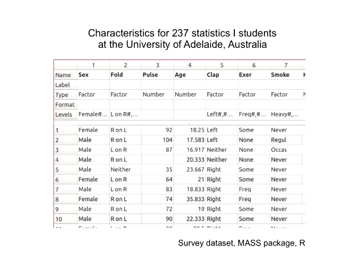I went ahead and picked a data set from there. I have to say it's not all that interesting of a data set, but I think it will demonstrate some of the characteristics that form the basis for graphing. There are 237 students in the data set — they were statistics one students from the University of Adelaide in Australia. I don't really know much else about the data set, sadly — usually I like to know more.